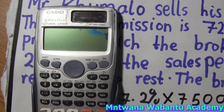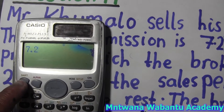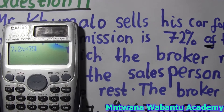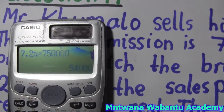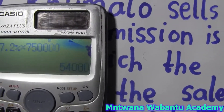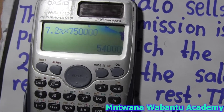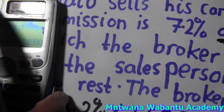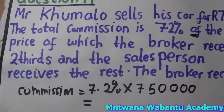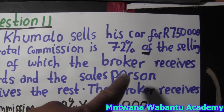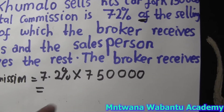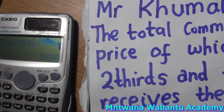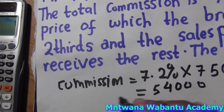Using the calculator: 7.2%, which is shift then percent, times R75,000. This gives the commission. The selling price with the broker is 7.2% of R75,000, which comes out to R5,400. This is the total commission.